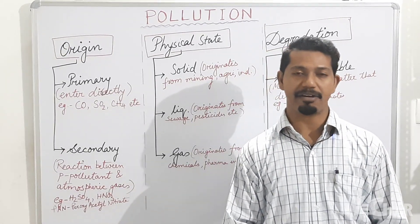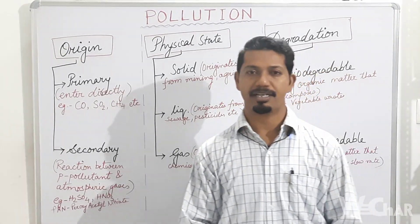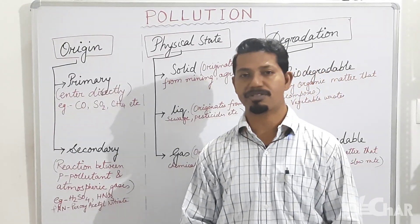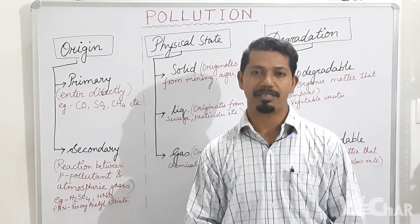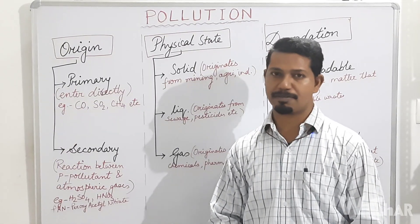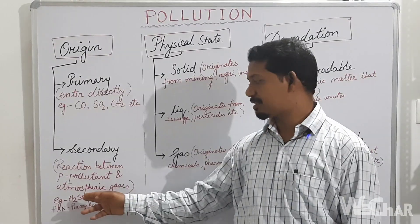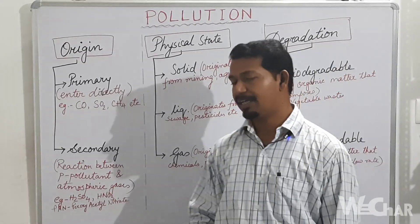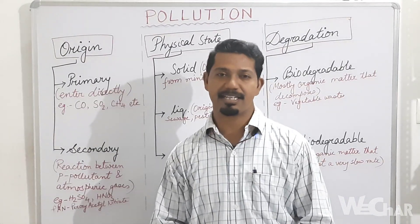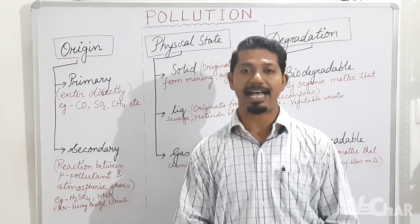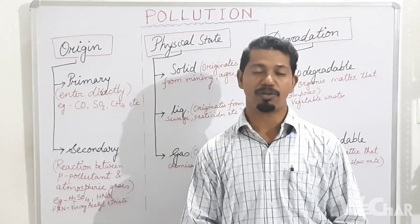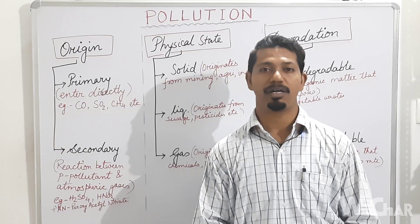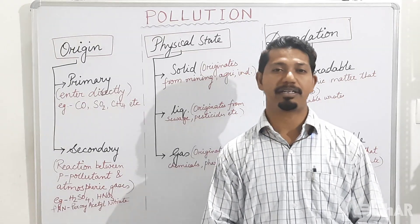In the case of secondary pollutants, the primary pollutants react with atmospheric gases forming some poisonous substances. These are sulfuric acid, nitric acid, etc. These acids are responsible for acid rain, which not only harms humans but also monumental structures.